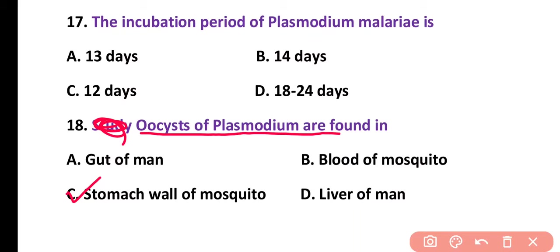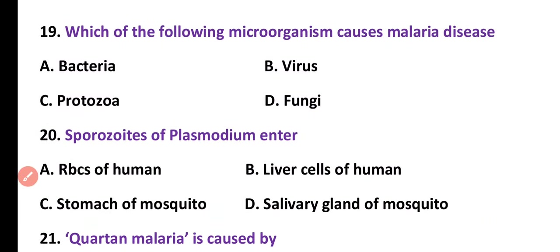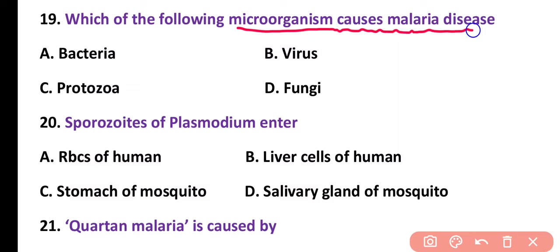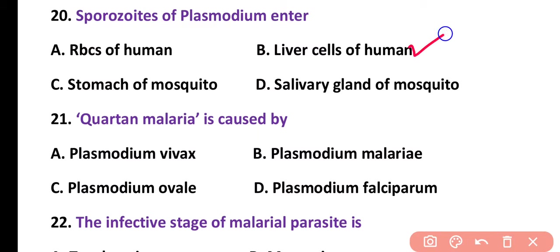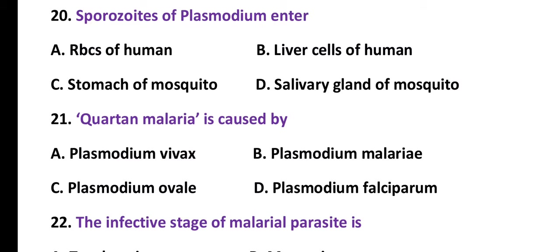Question number 20. Sporozoites of Plasmodium enter: RBC of human, liver cells of human, stomach of mosquito, or salivary gland of mosquito. Correct answer is option B. Sporozoites of Plasmodium first enter the liver cells of humans.